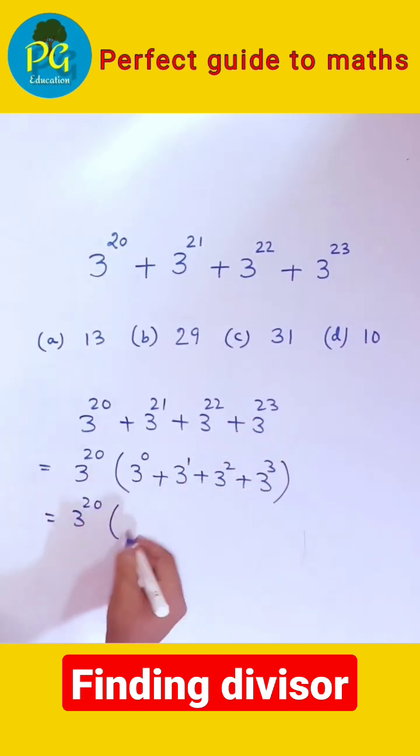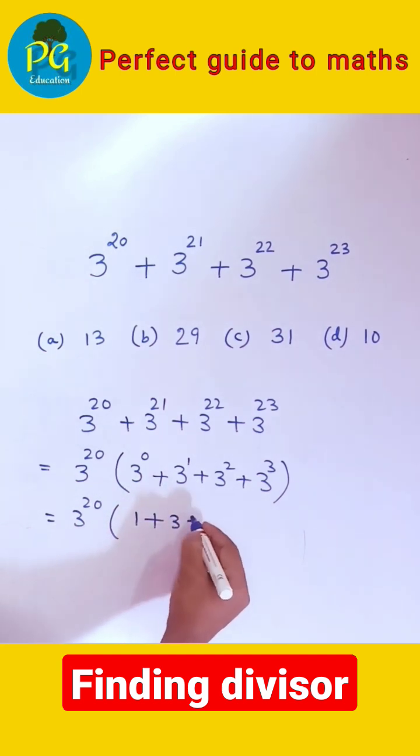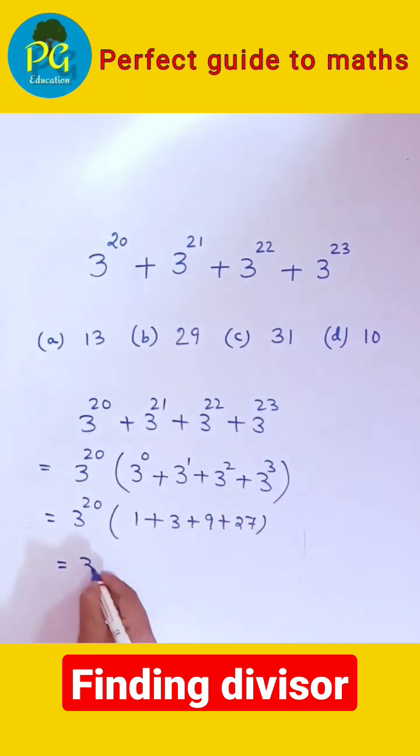So 3 to the power 0 means 1, 3, 9, 27 is equal to 3 to the power 20 into 9 plus 1.